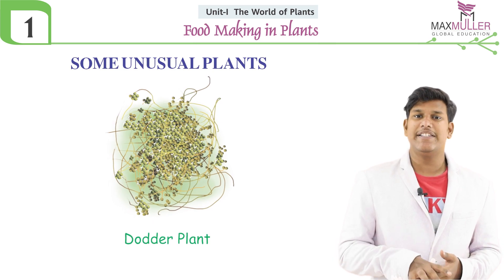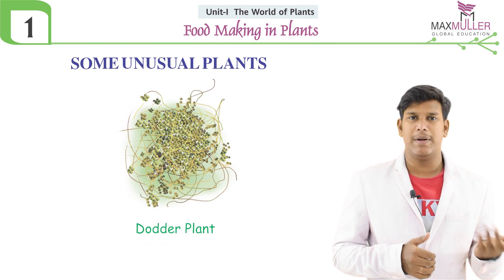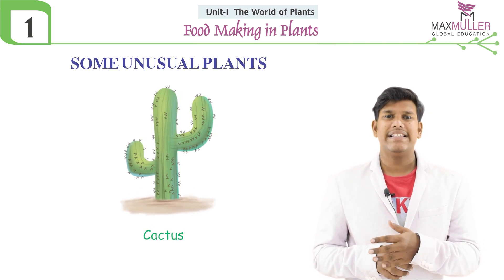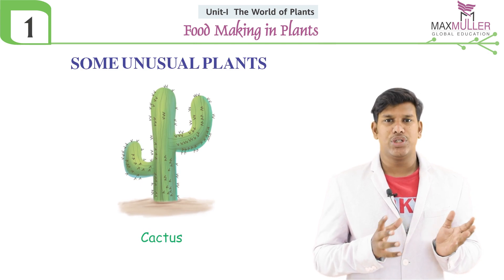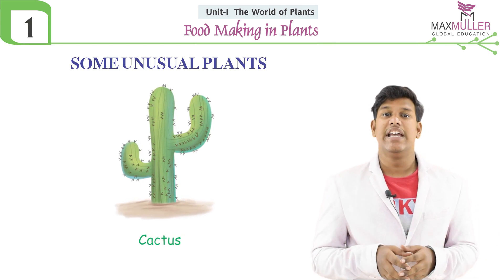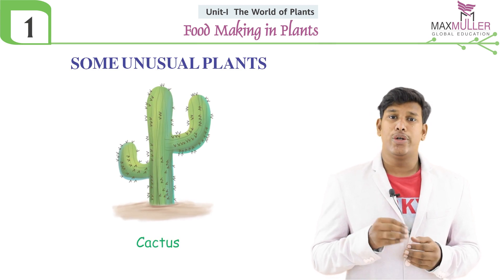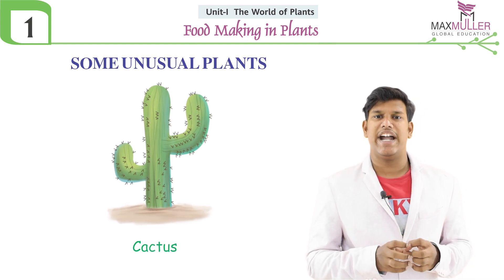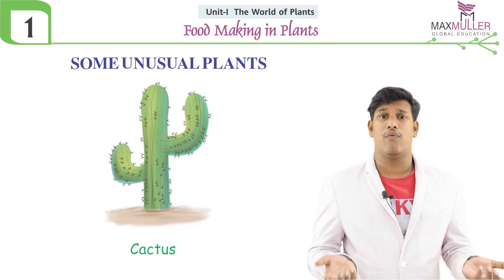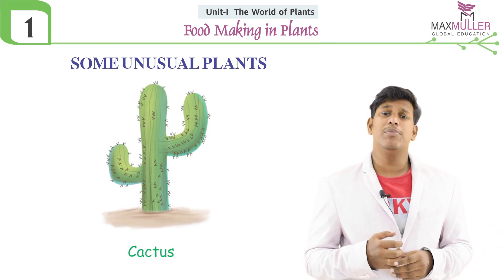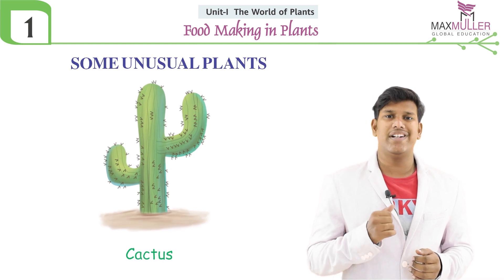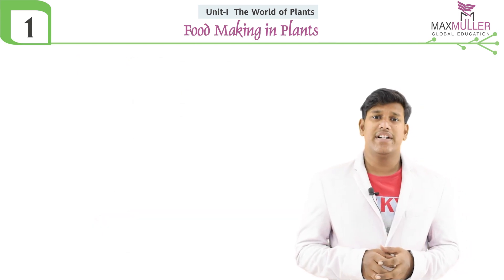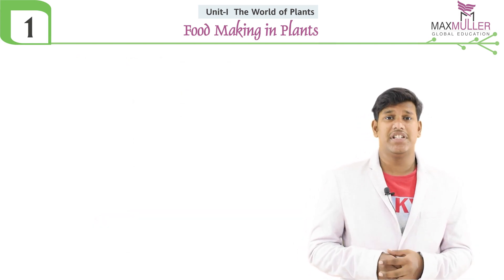A plant known as dodder depends upon other plants for food — it cannot prepare its own food. These also come under unusual plants. The cactus is a desert plant and also an unusual plant which has no leaves. Its leaves are replaced with spines to reduce the loss of water. The stem is green and bulged, and it stores large amounts of water for its survival.